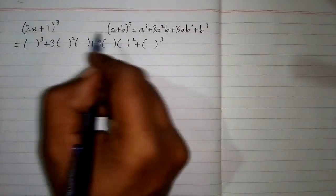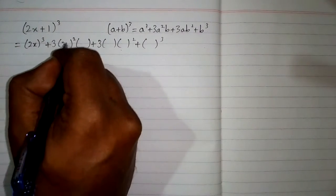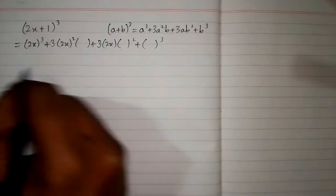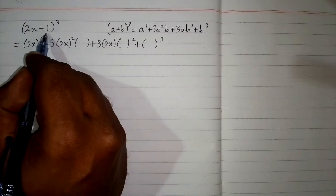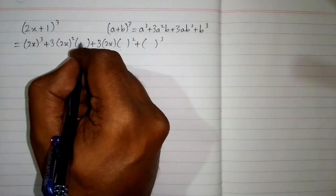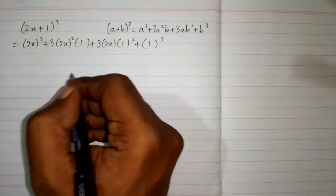We will put 2x in place of a. So we will put 2x over here, over here and over here. Then the value of b is 1, so we will put 1 in place of b over here, over here and over here.